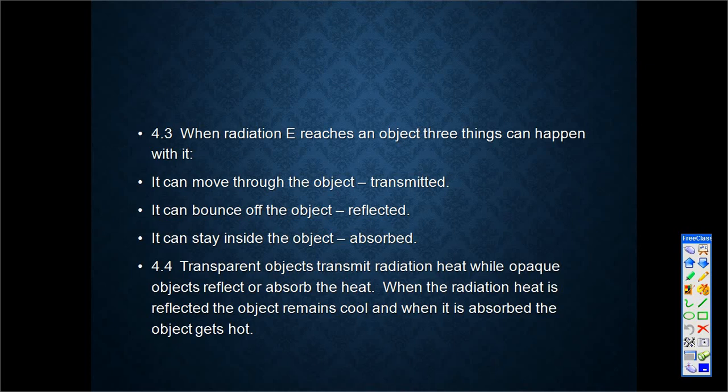So when radiation of the sun comes to an object, three things can happen. Number one, it is transmitted, like for example through a window. By a mirror it is reflected.